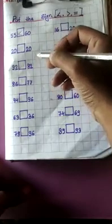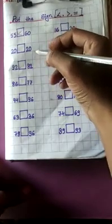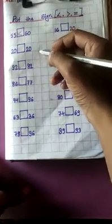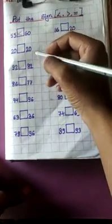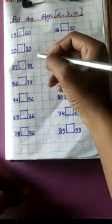Now next: 20 and 20 — both side 20. 20 is equal to 20. Means this symbol — like this.